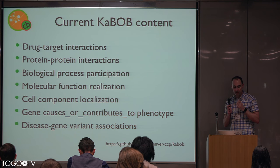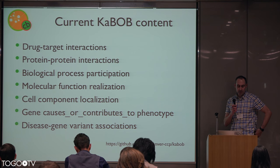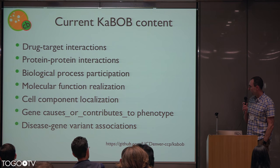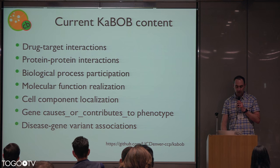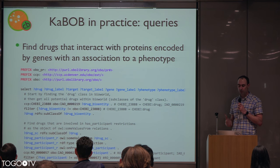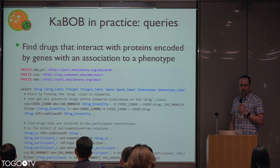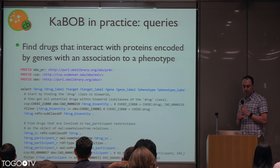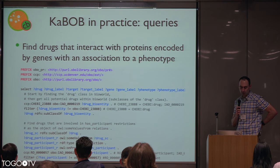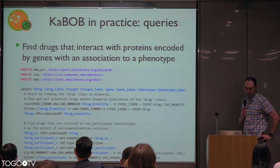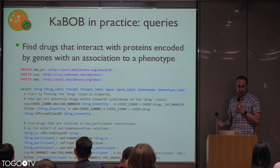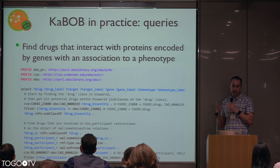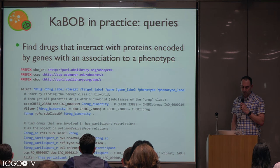So what is currently in KEBAB? We have a number of representations — this work is ongoing — but there are things ranging from drug-target interactions to biological process participation, cell component localization, disease-gene-variant associations, and the like. In practice, you can obviously query it thinking just about the biology. For example: find drugs that interact with proteins encoded by genes with an association to a phenotype. The user doesn't really need to understand the underlying structure of whatever source databases are required to answer this query — in this case, at least three source databases that would have to be integrated.